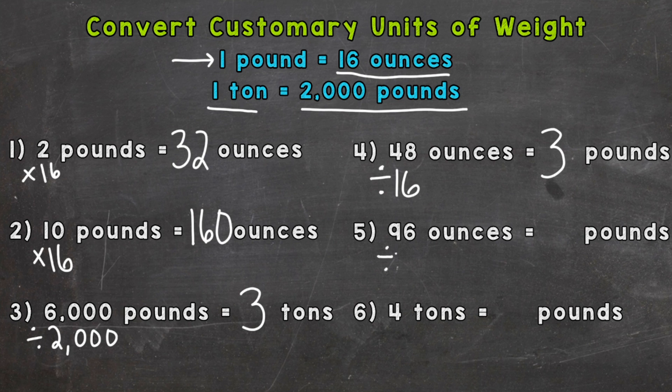So let's do 96 divided into groups of 16, and that's going to give us 6. So 96 ounces equals 6 pounds.